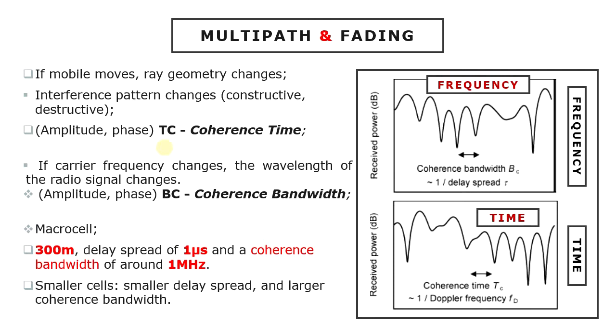In a macro cell, a typical path difference might be around 300 meters, giving a delay spread of 1 microsecond and coherence bandwidth of around 1 MHz. Smaller cells have a smaller delay spread, so they have a larger coherence bandwidth.